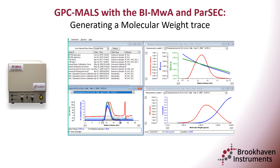The MWA can acquire the analog output from a variety of detectors that may already be part of an existing GPC system, to provide additional detection capabilities such as viscosity, UV, and RI. This data can be read into the Brookhaven Instruments size exclusion chromatography acquisition software, PARSEC, to produce a unified chromatogram.